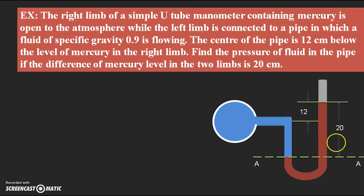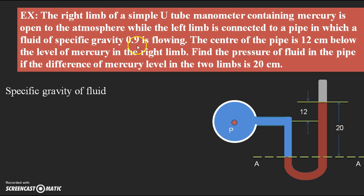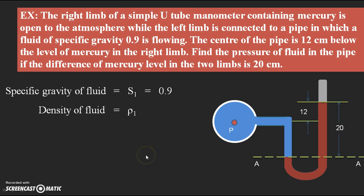The difference in mercury levels is 20 cm and the distance of the center of the pipe from the mercury level is 12 cm. Now I would like to write the data given in the problem. P is the pressure we need to find. The specific gravity of the fluid in the problem is given as 0.9, represented as S1, so S1 = 0.9. With the help of S1 we can find out the density of the fluid, since specific gravity is the ratio of the density of the liquid to the density of the standard liquid. So ρ1 is the density of the fluid for which we need to find the pressure.